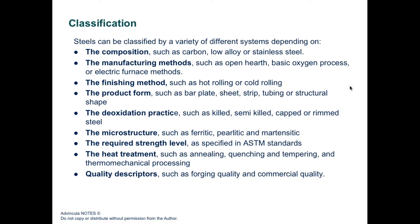Another classification is based on microstructure, observable by polarized microscopy or X-ray diffraction, yielding pearlitic or martensitic types of steels. They can also be classified by strength level as specified by ASTM standards, by heat treatment such as annealing, quenching, tempering, and thermo-mechanical processing, and by quality descriptors such as forging type or commercial quality. Many steels are known by industrial names such as Incoloy, Nickeloy, etc.